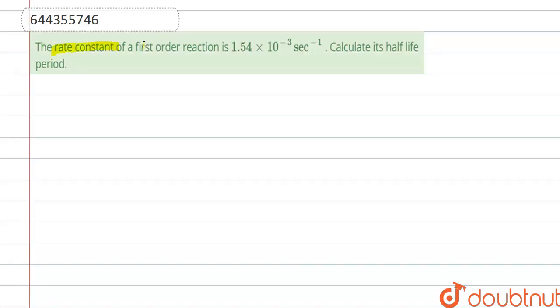Hello everyone, here the question is: The rate constant of first order reaction is 1.54 × 10⁻³ sec⁻¹. Calculate its half life period.